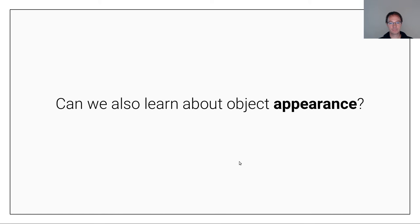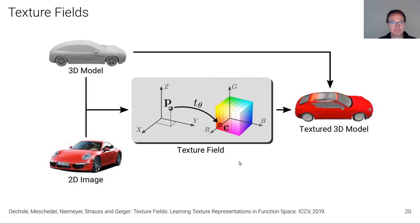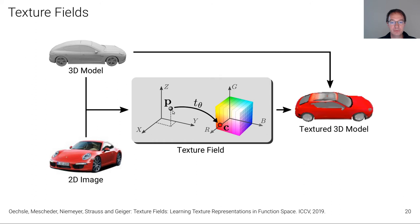Can we also learn about object appearance? So far we've been talking about object geometry. At ICCV, we proposed an extension of the previous model that applies essentially the same idea to predicting texture. In this case, the input is a 3D model — a CAD model or a model predicted using an occupancy network — as well as an image as the condition. Then we have what we call a texture field that for every point on the surface of that object predicts the corresponding color value, which allows us to render textured 3D models from this geometry.